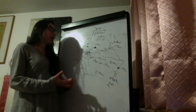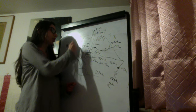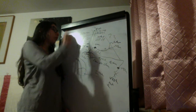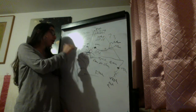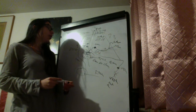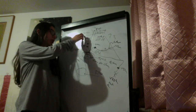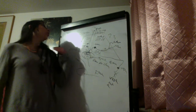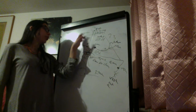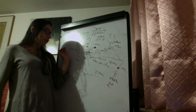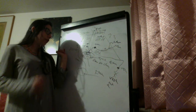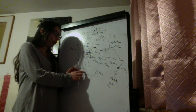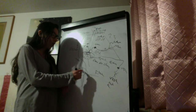Damage to brain structures above the red nucleus brings us closer to the cortex and produces a decorticate posture, while damage below the red nucleus produces a decerebrate posture. If we damage the stimulus to the flexor muscles — that is, we are damaging structures above the red nucleus — we lose the upper motor neuron input to the lower motor neuron for the flexor muscles. Remember that between the upper and lower motor neuron there is an interneuron that releases an inhibitory neurotransmitter.